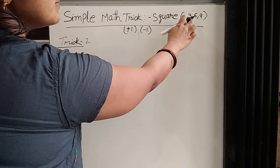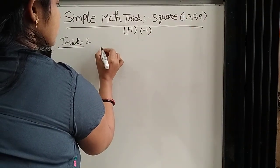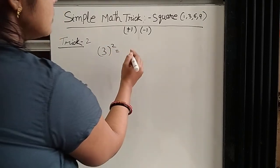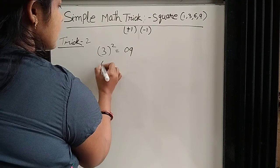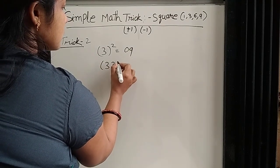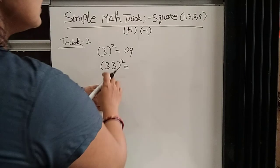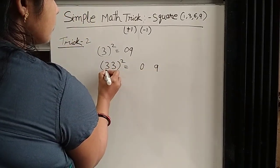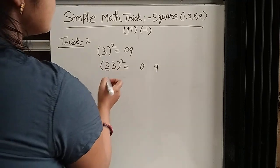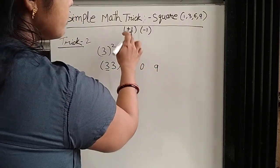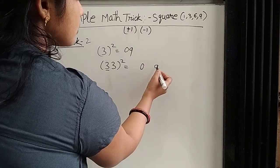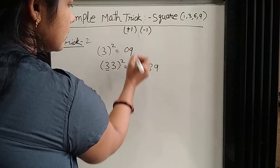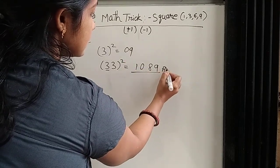Now number 2. If there is the number 3, so 3 square — everyone knows it's 9, or you can write 09. Suppose 2 3: 3 square is 09, and the rest is 1 3. So plus 1, minus 1: 9 minus 1 is 8, 0 plus 1 is 1. So the answer is here.